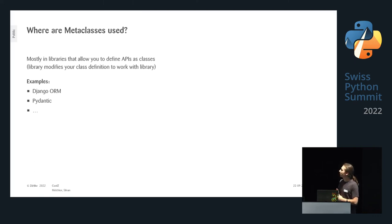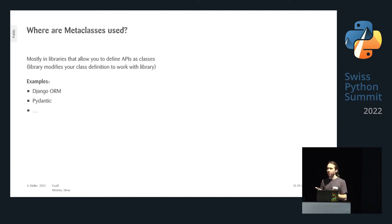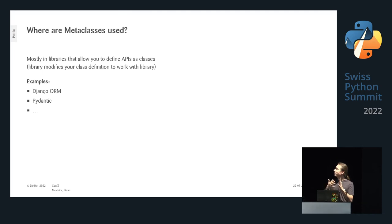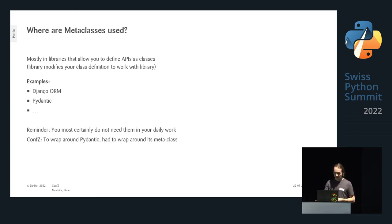Metaclasses are mostly used in libraries where you need to define APIs as classes — for example in pydantic where you define a BaseModel with class variables, or in ORM libraries like Django ORM where you define database tables as classes. The library needs to understand all the classes you've defined and even modify them on the spot, adding functionality like save, load, and search. That's where metaclasses are heavily used and where they should be used.